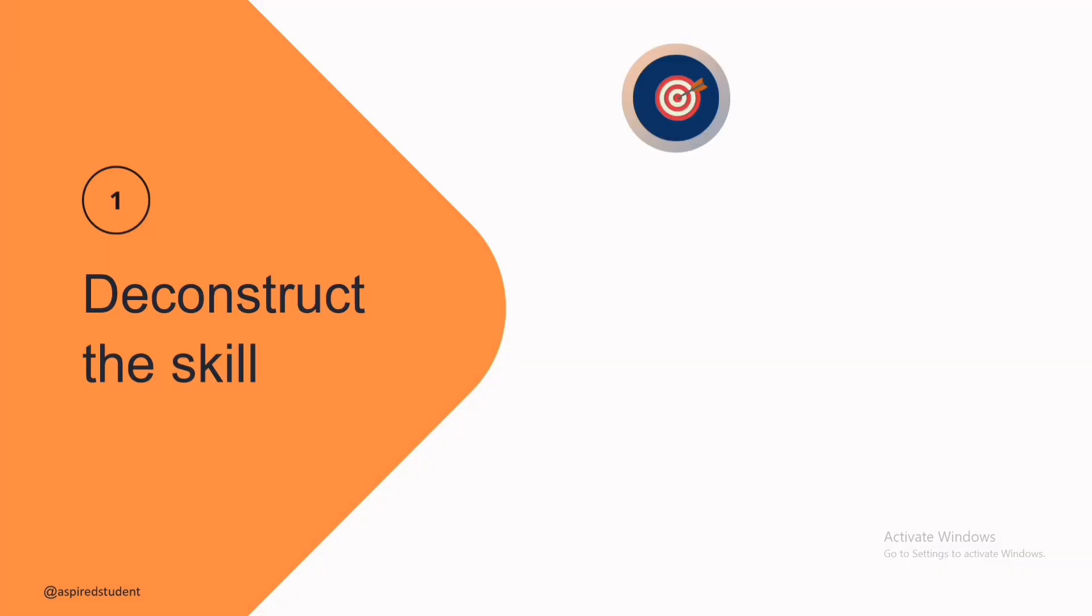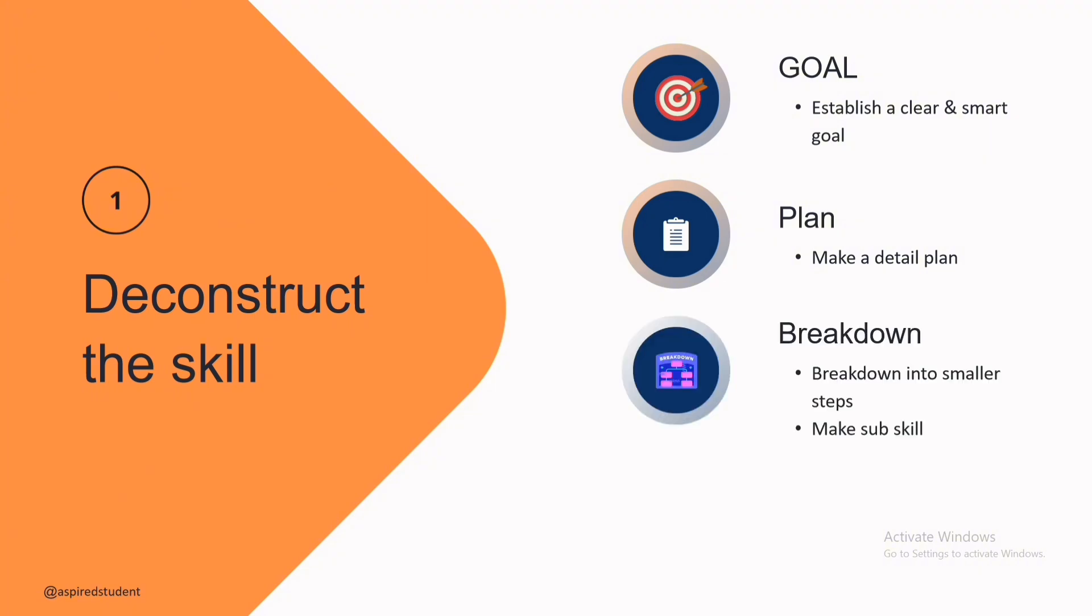Reconstruct a skill. First, we have to know what to learn. First we have to make a clear and a smart goal. Exactly what we have to learn. Then, make a detailed plan on how we can learn. And then, we have to break down into smaller steps. Make some skills. What are the steps of learning? Now, get the right tool. Getting the right resources which required during practicing.